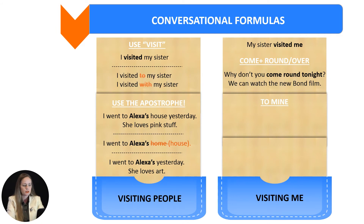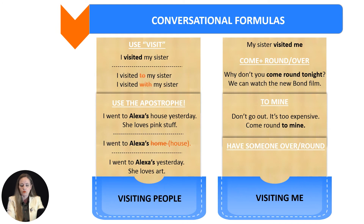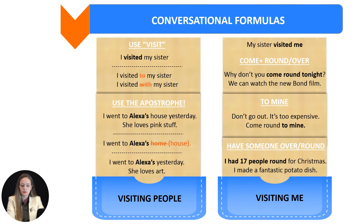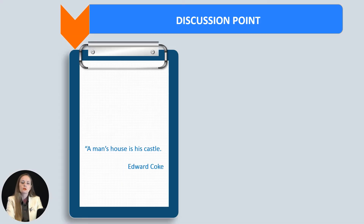The next one is even shorter. We can say to mine. For example: don't go out, it's too expensive, come around to mine — meaning come around to my house. We can also say have someone over or have someone around. For example: I had 17 people around for Christmas, I made a fantastic potato dish — meaning I had those people at my house.